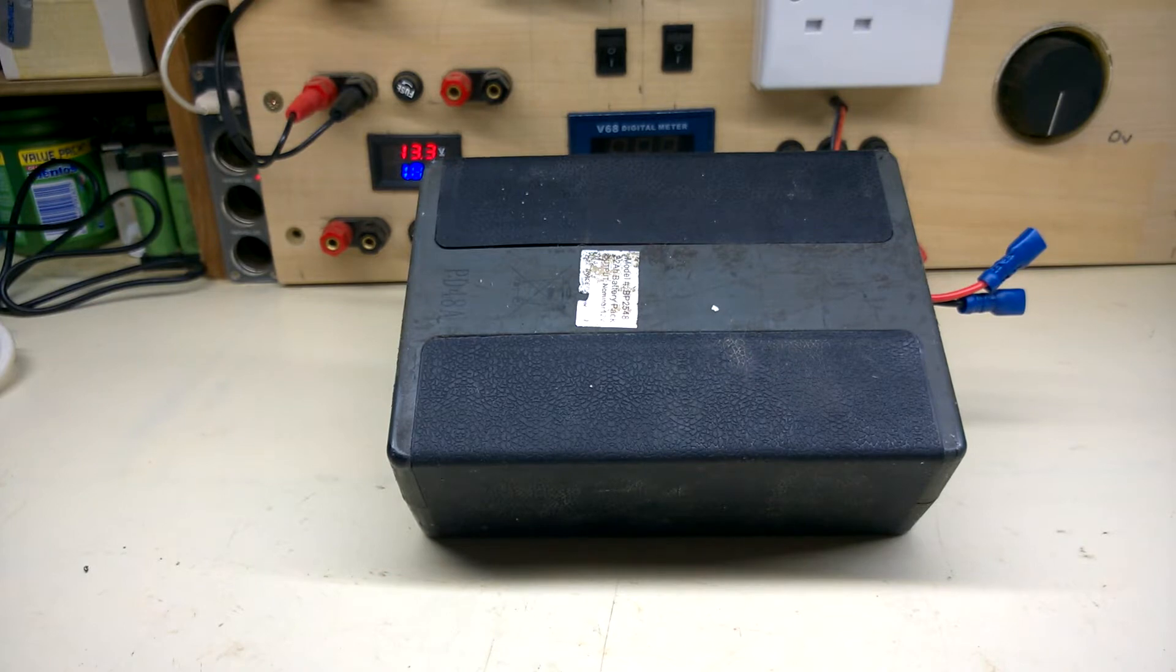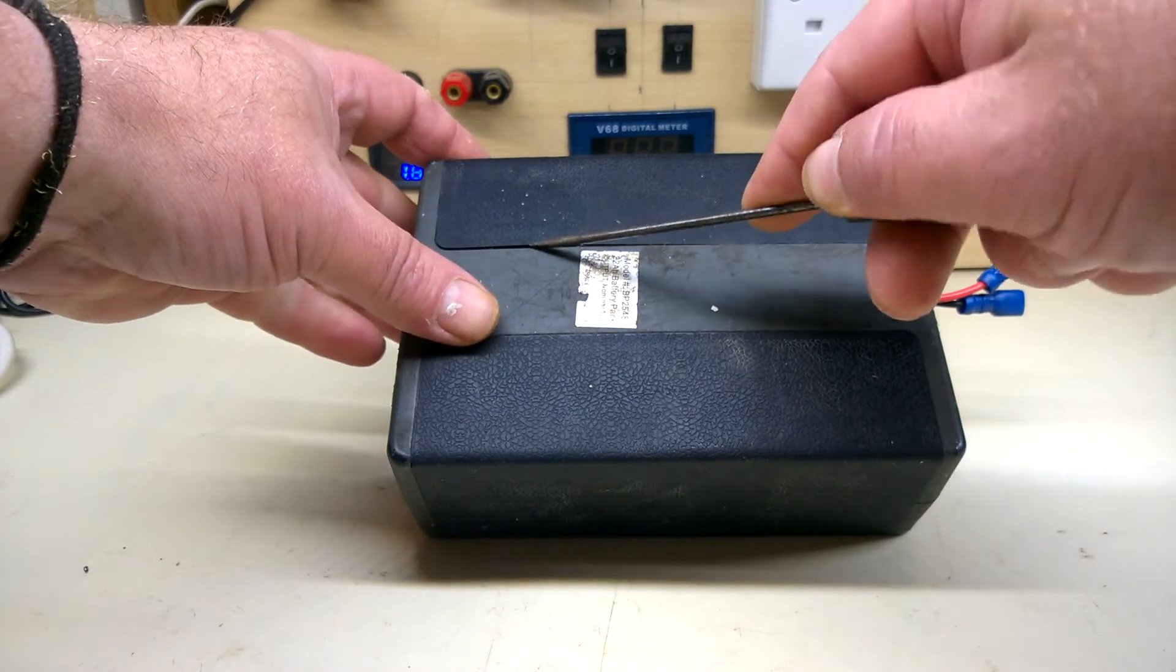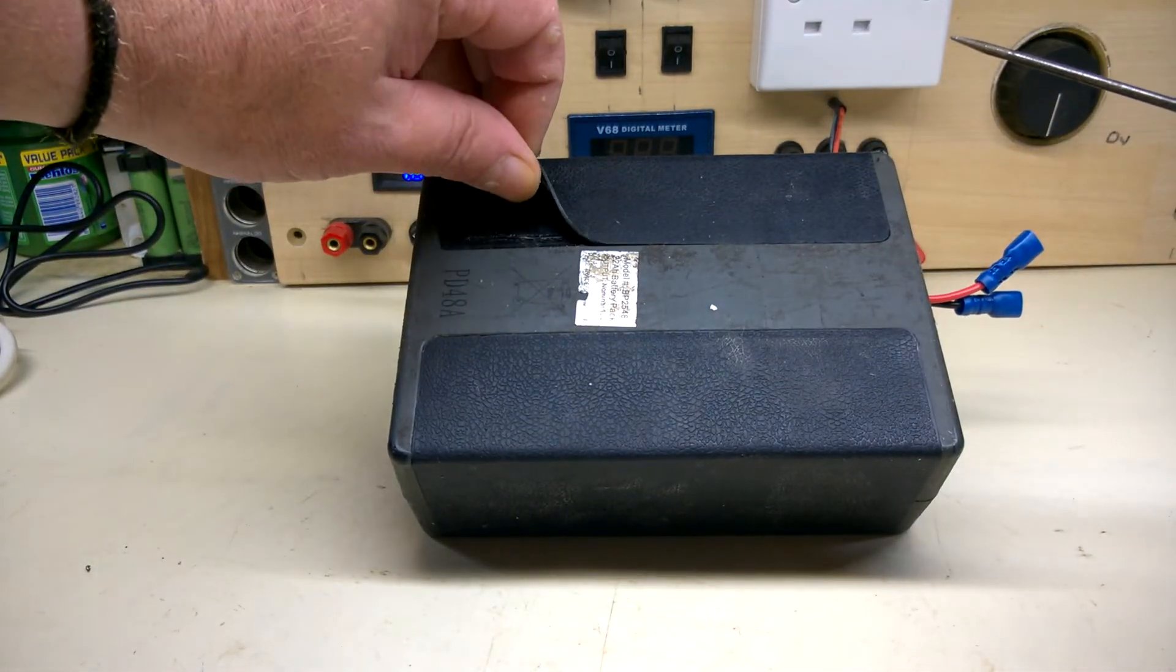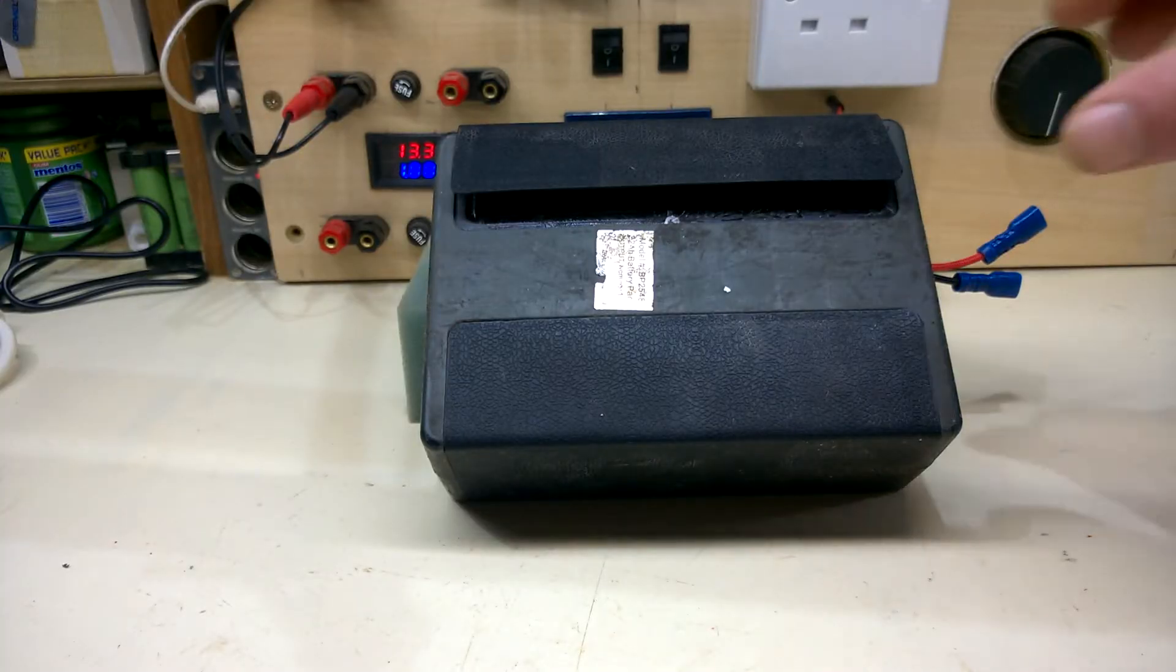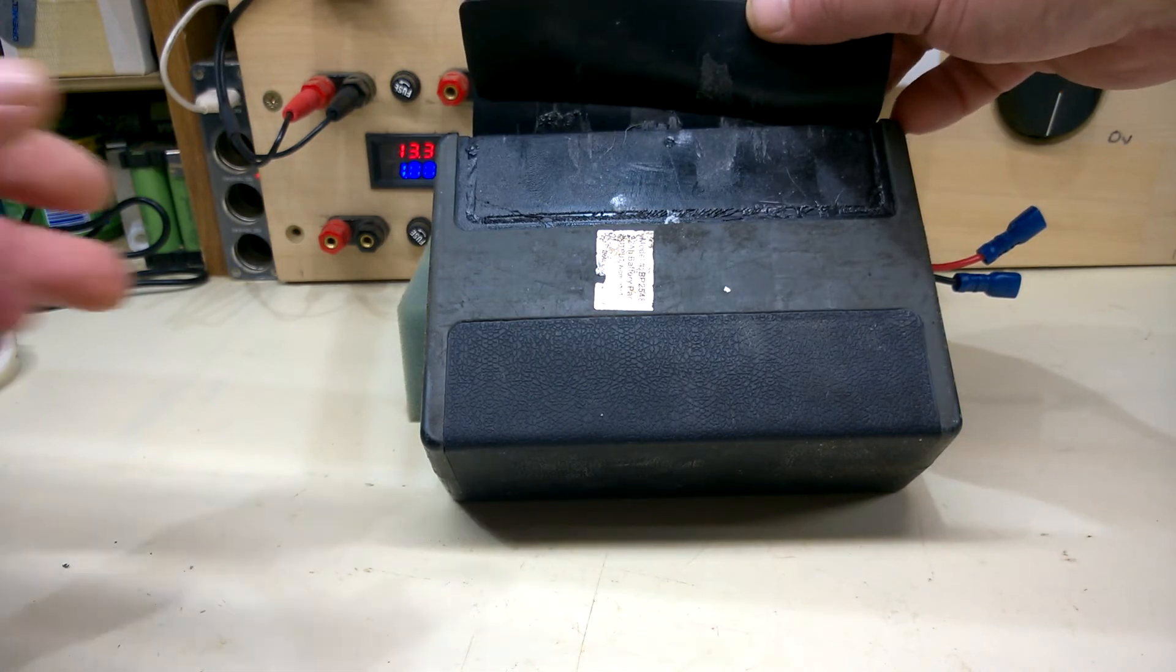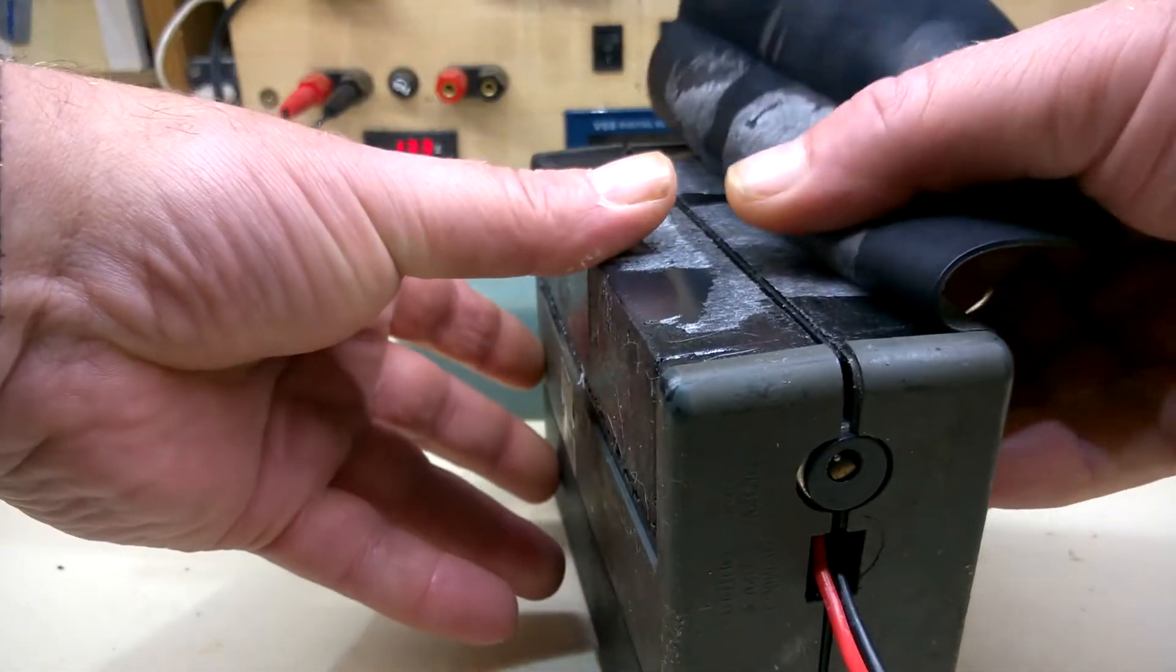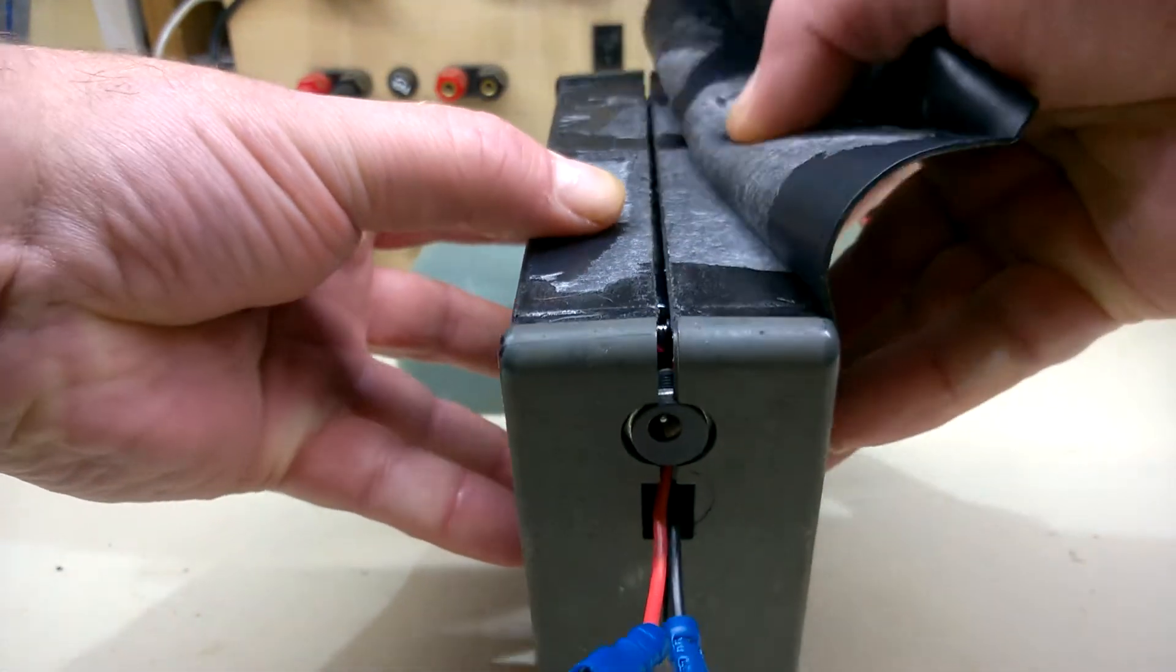It looks like the screws are hidden under the cover. This is the back of the unit. What's this cover there? Somebody's been inside this before. I've been peeling this cover off looking for screws. Don't seem to have any. Don't seem to have any up the top. It looks like there's no screws holding this together.